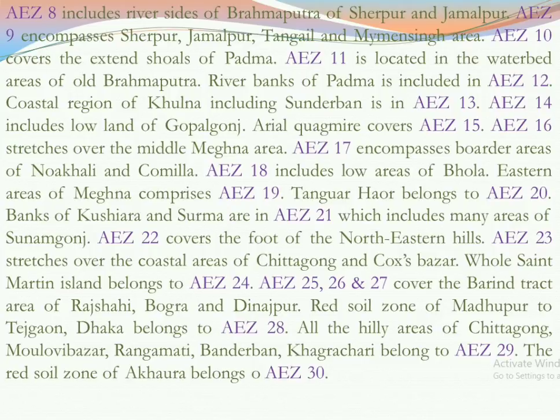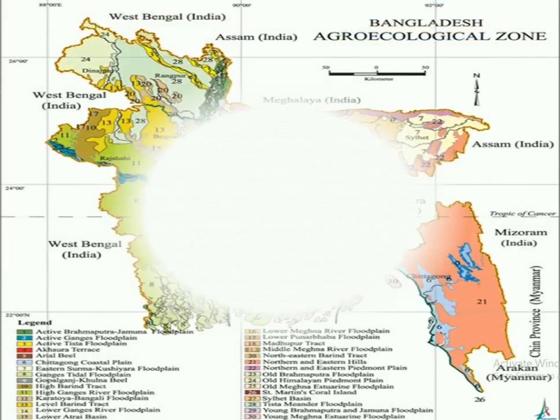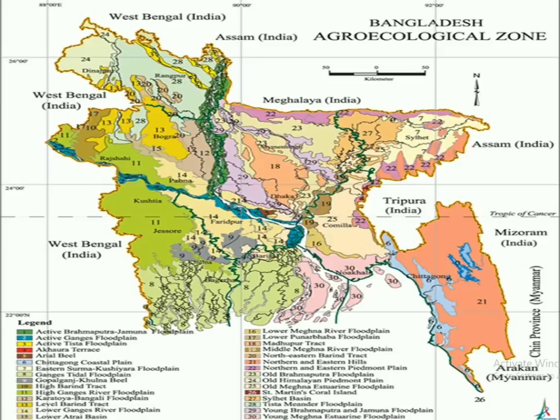So that is all about the 30 zones into which the total Bangladesh is divided. Now let us see these 30 zones on the map. You can see all 30 zones are marked, and the map shows where each zone is located. This makes it easy to understand how the total area of Bangladesh is divided into 30 agroecological zones.